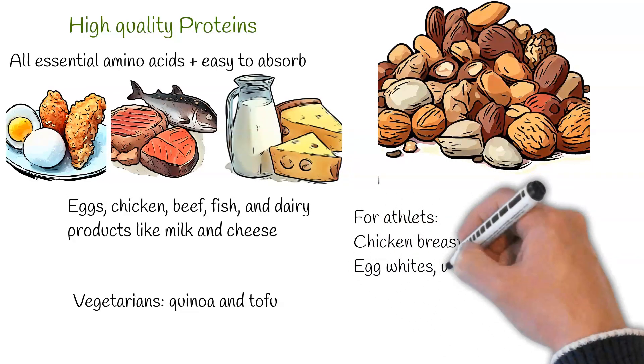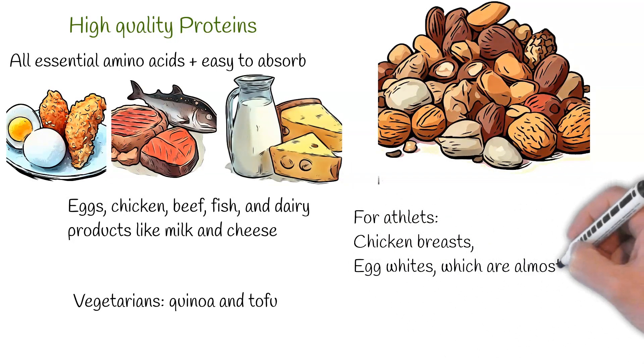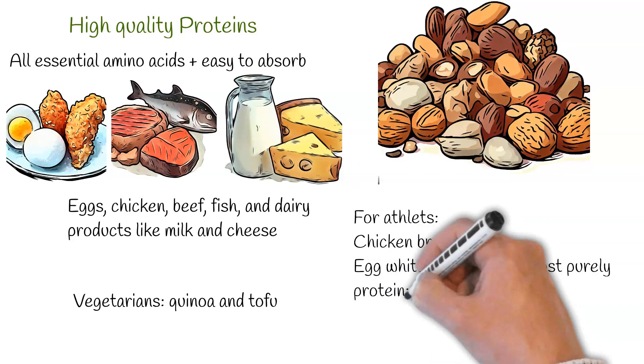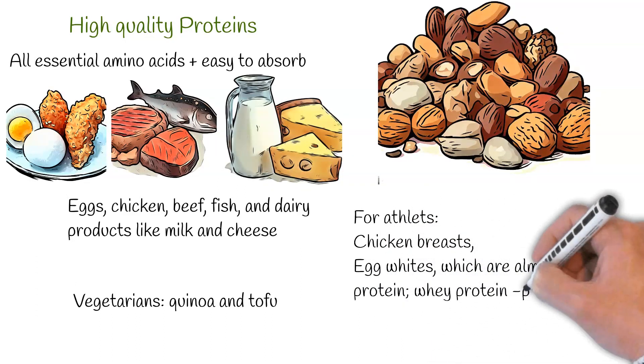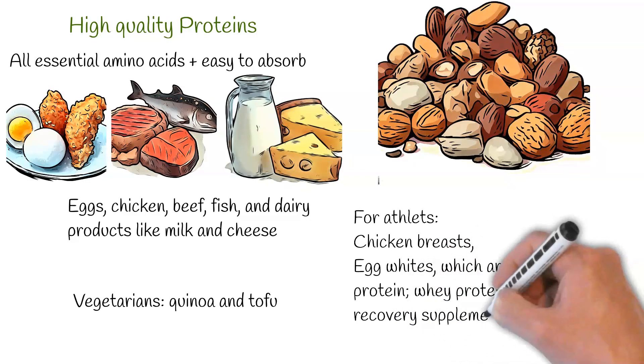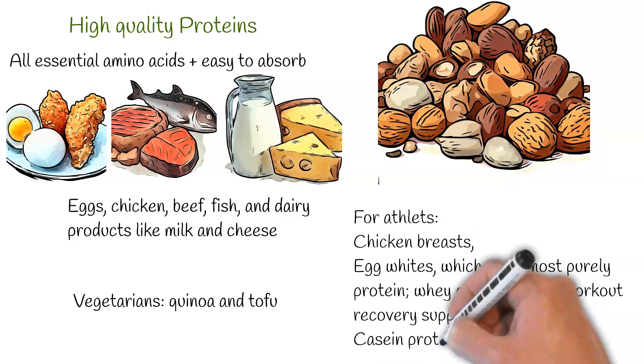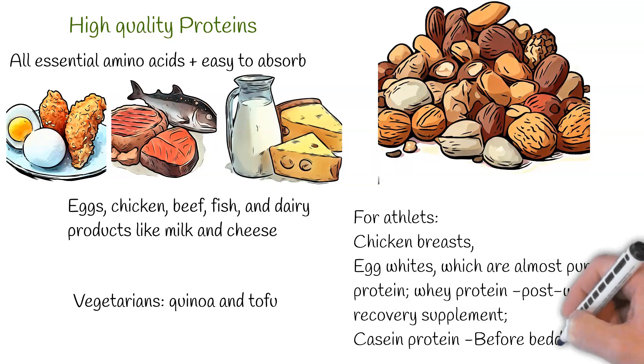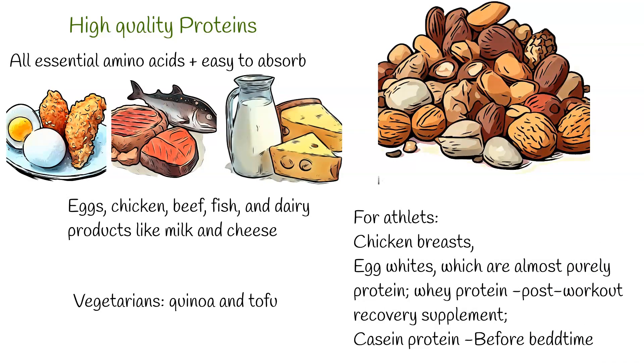For athletes seeking the best protein sources to promote muscle growth, the frontrunners are chicken breasts, renowned for their high protein levels, egg whites, which are almost purely protein, whey protein, a popular post-workout recovery supplement, and casein protein, which digests slowly and is often recommended before bedtime for sustained muscle repair.